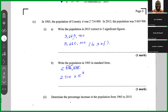To recap: when writing a number in standard form, the decimal point comes immediately after the first significant figure, then you write times 10 to the power equal to the number of places the decimal point is moved from its original position to its new position.